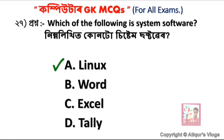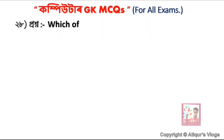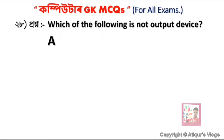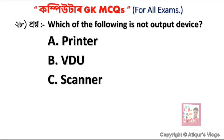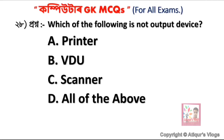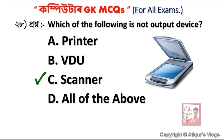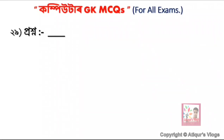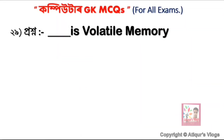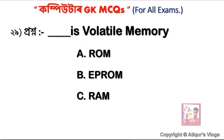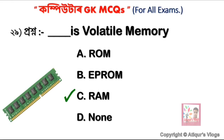Which of the following is NOT an output device? Options include Printer, Monitor, Scanner, and All of the Above. The correct answer is Scanner — Scanner is an input device, not an output device. The next question: which of the following is volatile memory? Option A ROM, option B EPROM, option C RAM, option D None. RAM is volatile memory — it is temporary memory.